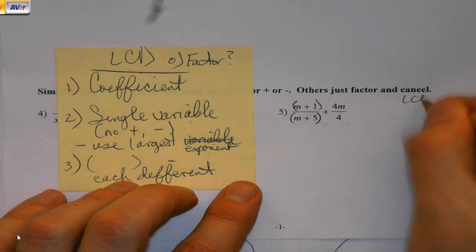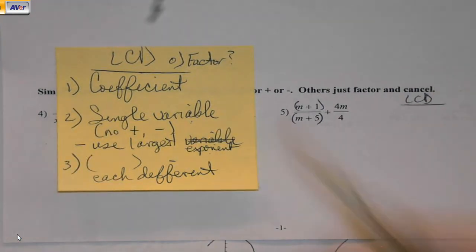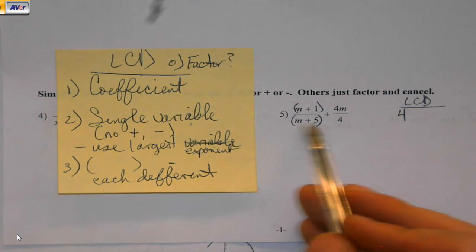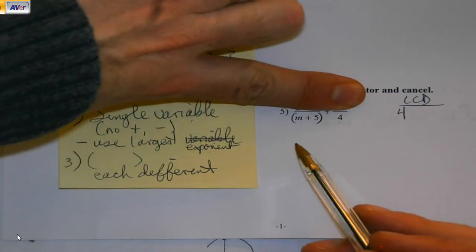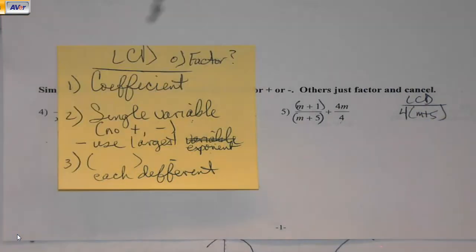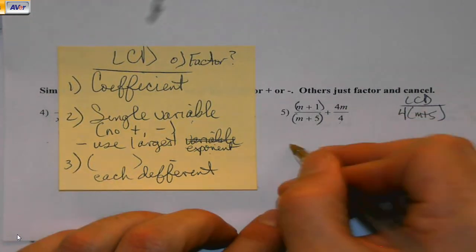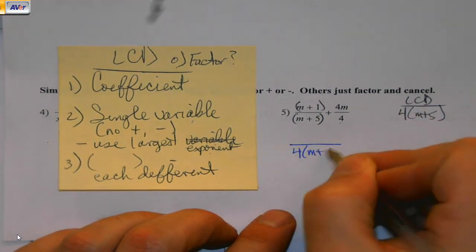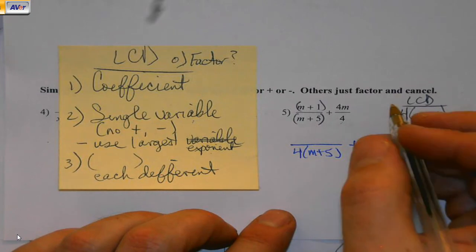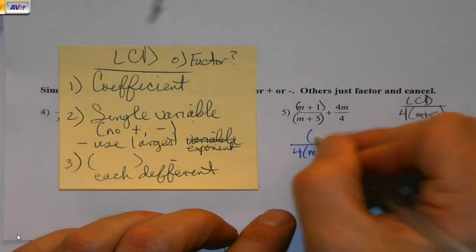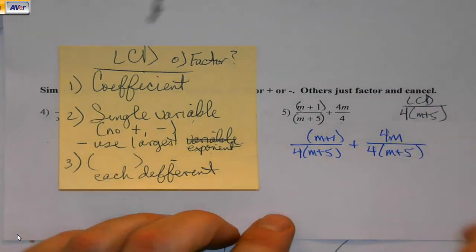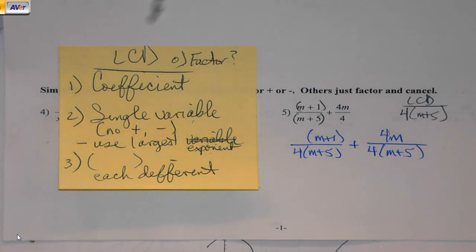When I go to build my LCD, I work my way down my checklist. Coefficient? Got one right there, four. Single variables, no plus or minus? Nope. Because we're only looking at the denominator, not the numerator. Parentheses, each different one. M plus y. So that is going to be my common denominator for each of my fractions.